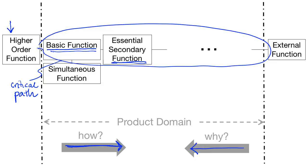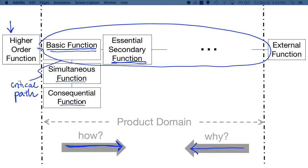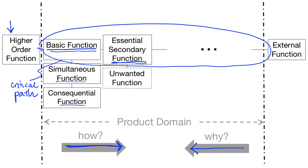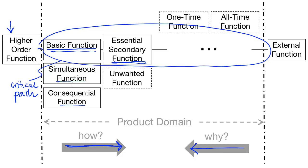Beneath each critical path function, we place any functions that occur simultaneously to those essential functions. For example, if a function occurs simultaneously with the basic function, we place it underneath that basic function. Similarly, functions that occur consequential to a critical path function are listed beneath that critical path function as consequential functions. Functions that are consequential to critical path functions but are unwanted are placed underneath those essential functions, but they are outlined with a dashed line. One-time and all-time functions appear above the diagram and are not directly connected to any single function.